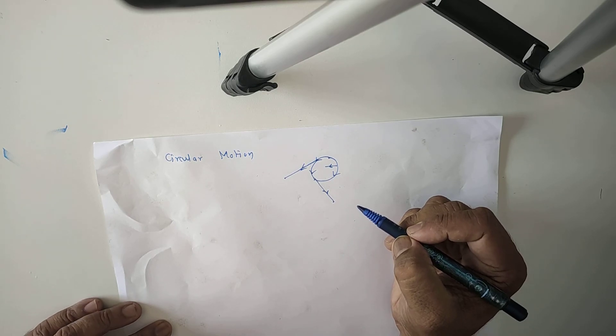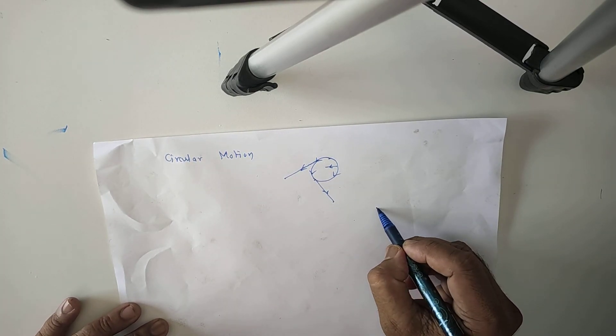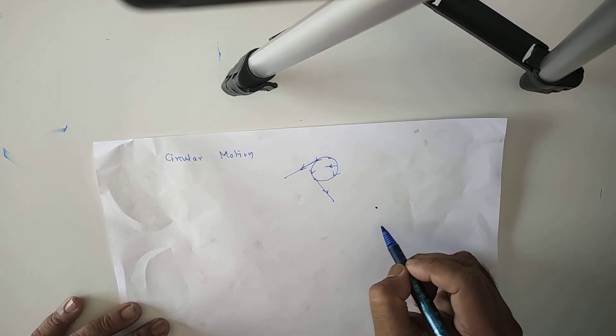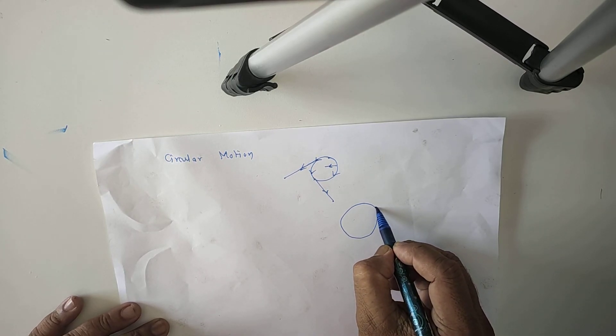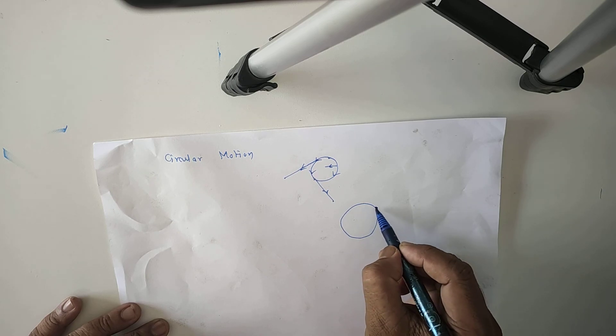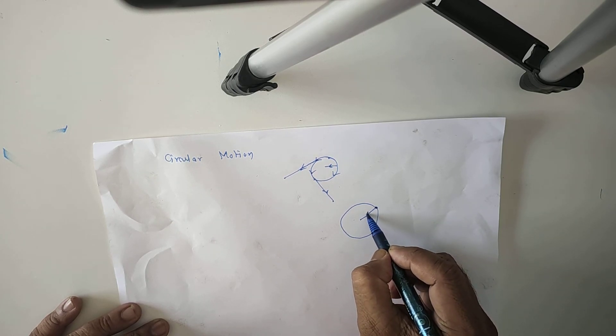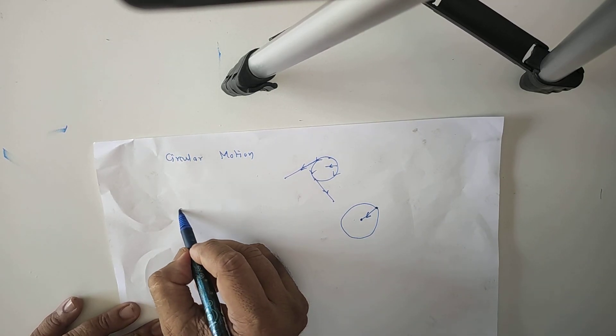Here a force acts on any object moving along the circle, and is directed towards center of the circle, and this is called centripetal force.